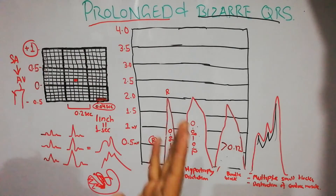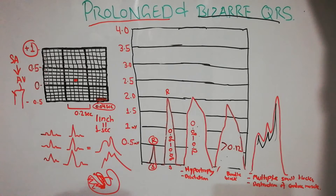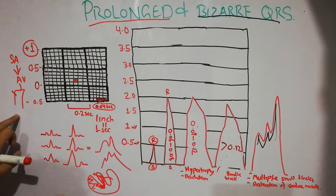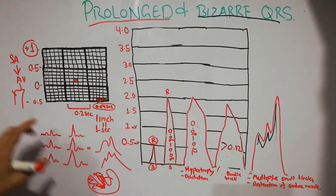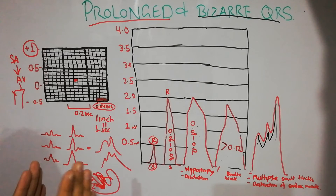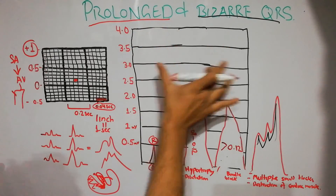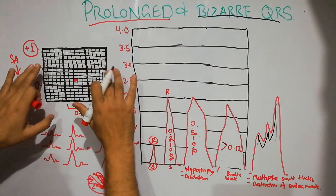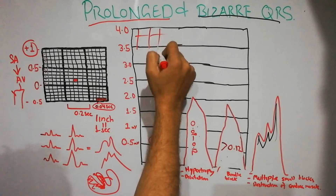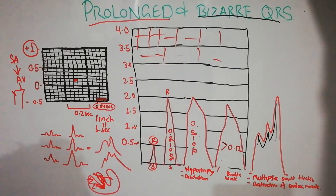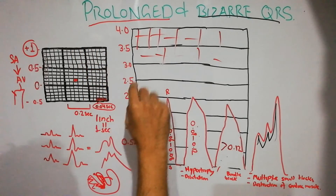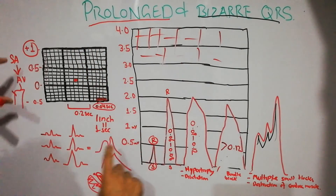Bundle branch block also leads to a reversal or change in the axis of the cardiac vector, which we have already discussed. The QRS complex width will be increased. This diagram shows a large version of the ECG paper where only horizontal lines are drawn, with the voltage scale showing two large squares making 1 millivolt, 2 millivolts, 3 millivolts, and so on — the same diagram discussed in the previous lecture.